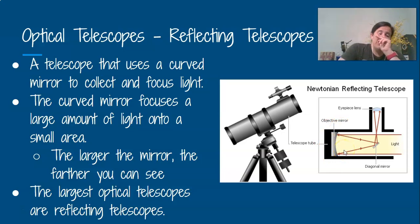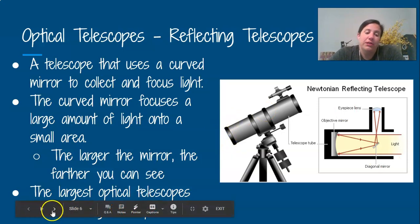So that is going to actually focus even more light into a smaller area. So again, the larger the mirror, the farther you can see. And this is a really big optical telescope. So the biggest ones that scientists use for the visible light ones are going to be reflecting telescopes. So we get a bigger mirror, we can see farther into space.